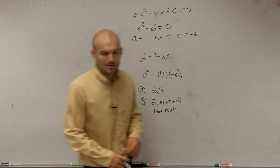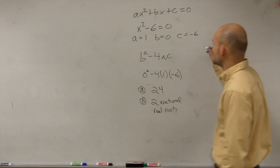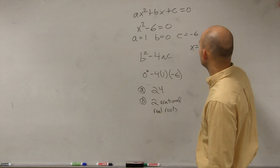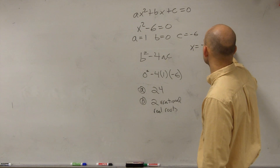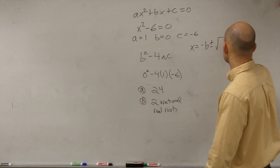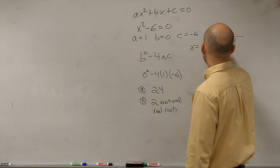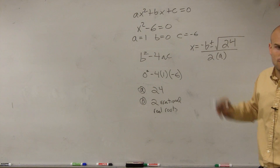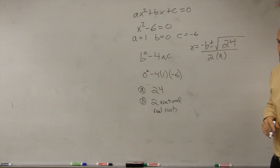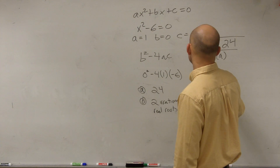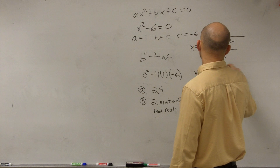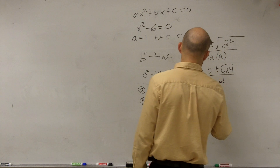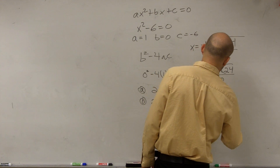Now let's do the last part — complete using the quadratic formula. x equals the opposite of b, plus or minus the square root of your discriminant, which is 24, divided by 2 times a. So we have x equals the opposite of b, which is 0, plus or minus the square root of 24, all divided by 2 times a, which is 2. So we have x equals plus or minus the square root of 24 over 2.